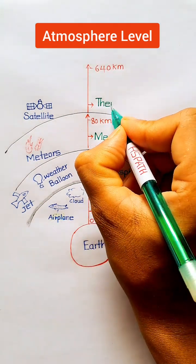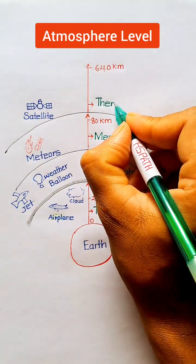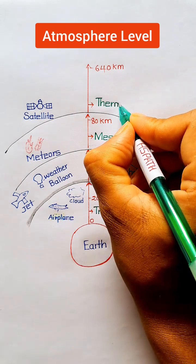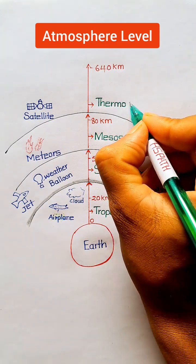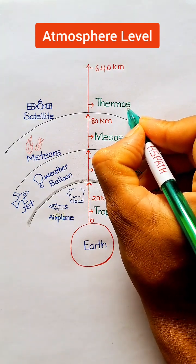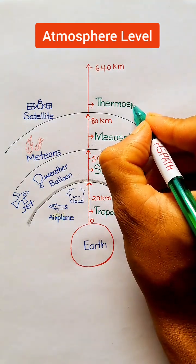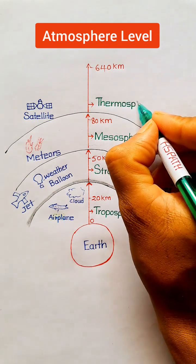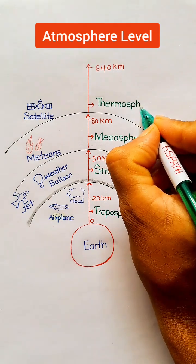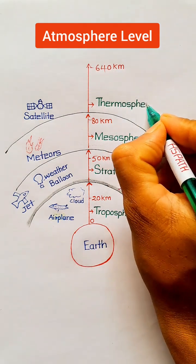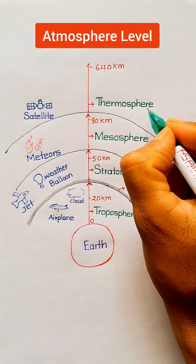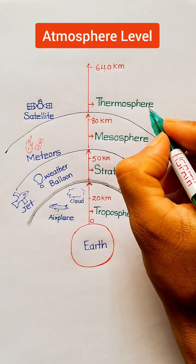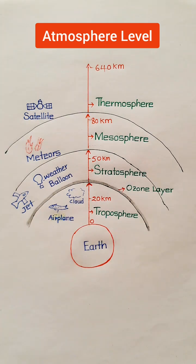The 80 kilometer to 640 kilometer region is called the thermosphere. In this region, different types of satellites travel.